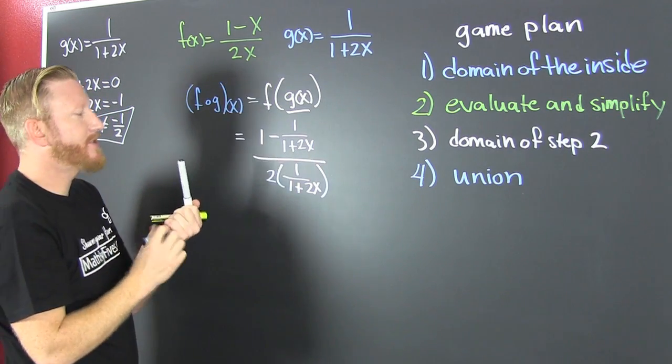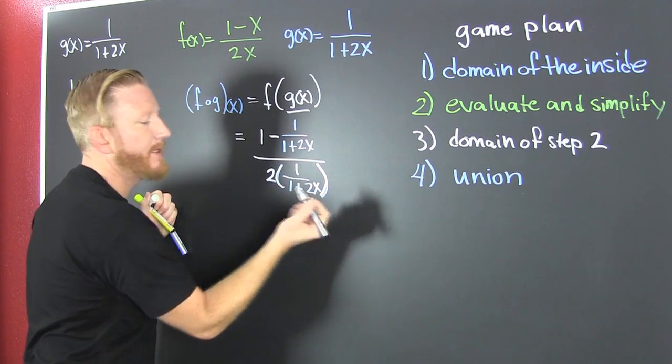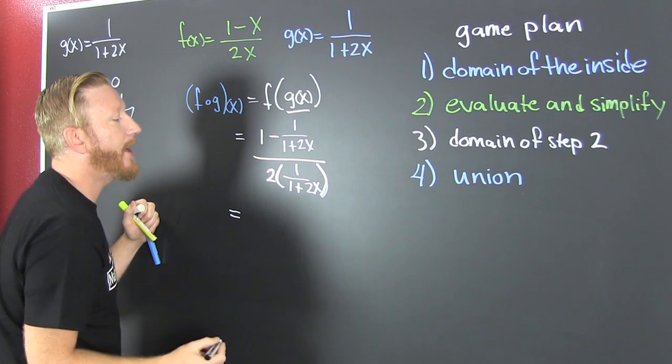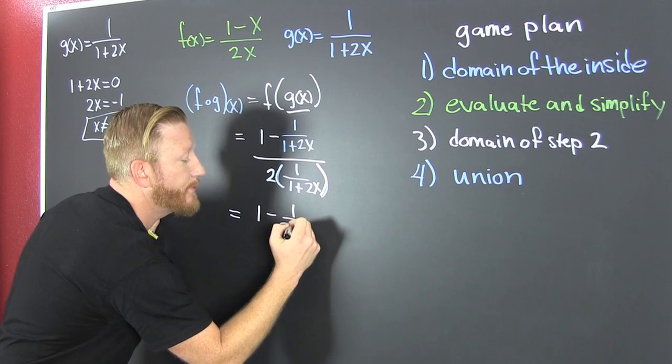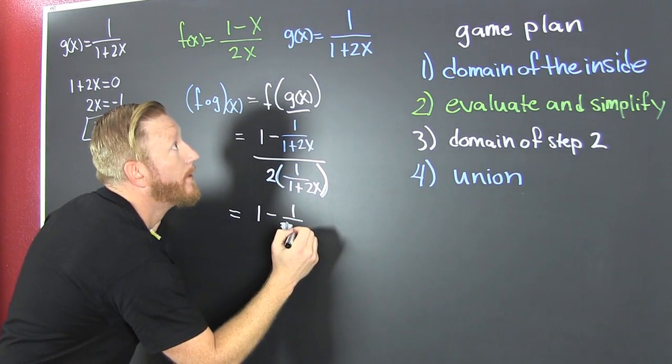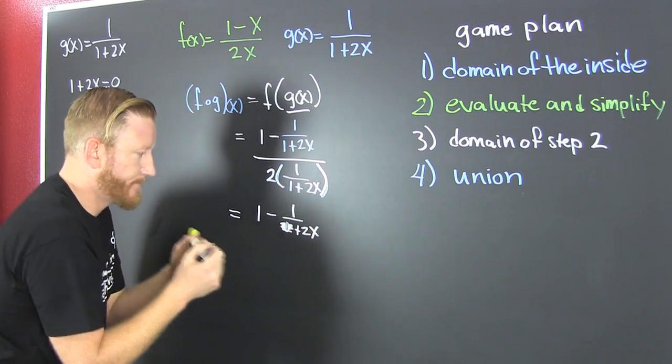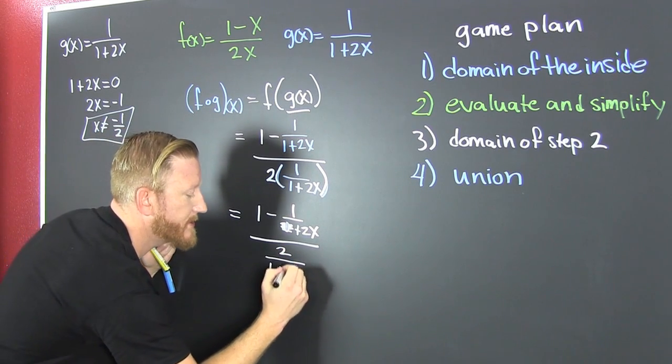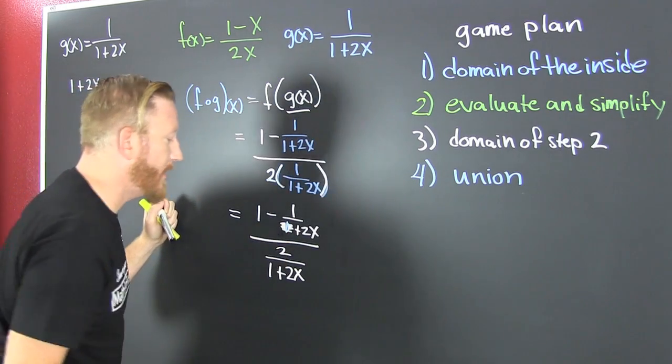Now we're going to powder blue. So what does that look like? I need to clean that up. Let's call that 1 minus 1 over 1 plus 2x. That's 1, all over, let's call that 2 over 1 plus 2x.